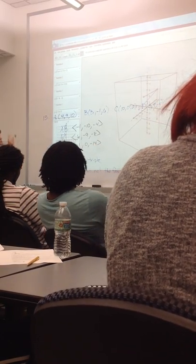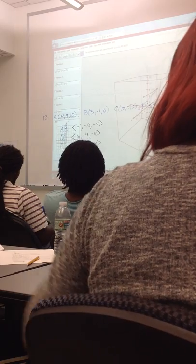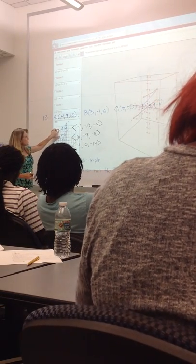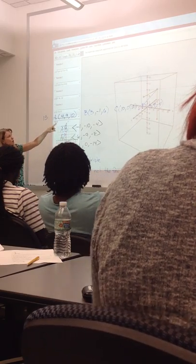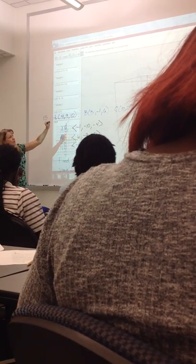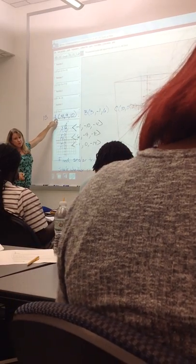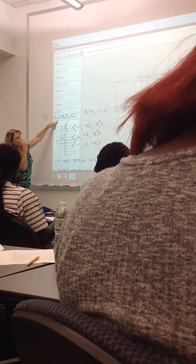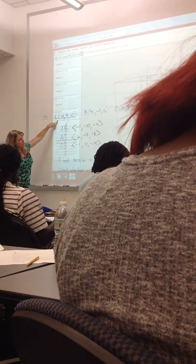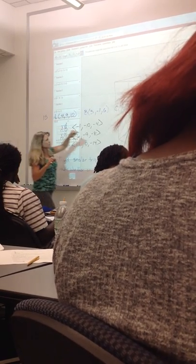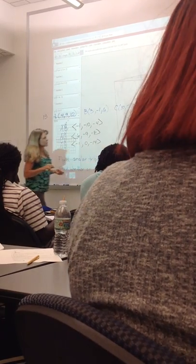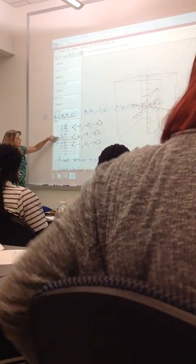So those are the vectors that I have drawn up there. These are the vectors that I've drawn up there, but when I drew them, I used A as the initial point. So I didn't use the origin as the initial point. Instead of them starting at the origin, I started them all at point A for it to more truly represent AB, AC, and AD.